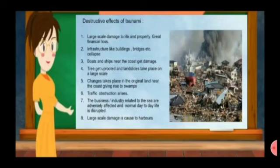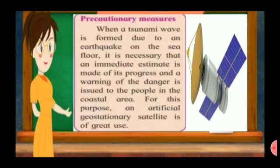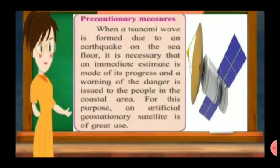Original landforms change near the coast, giving rise to swamps, and transportation is affected due to damaged routes. Normal day-to-day life is disrupted. As a precautionary measure for tsunami, with the help of an artificial geostationary satellite, predictions about tsunami can be made. It gives an immediate estimate about the progress of a tsunami, and based on such predictions, people from coastal areas are warned to save their lives.